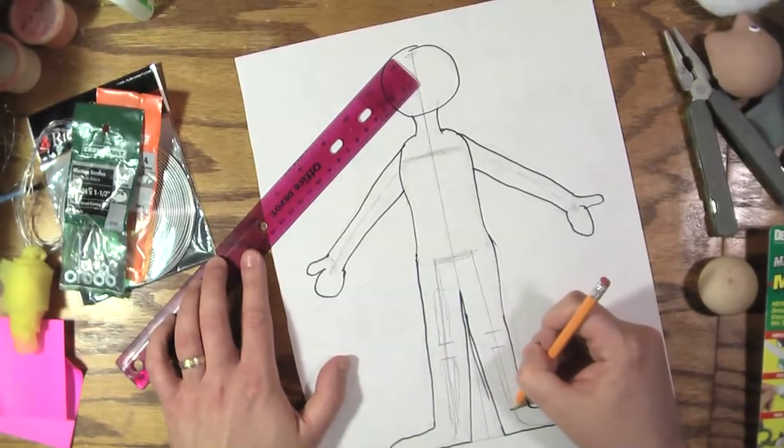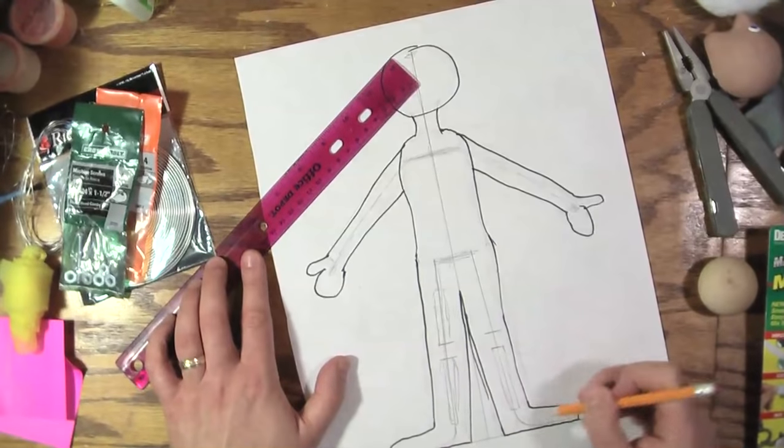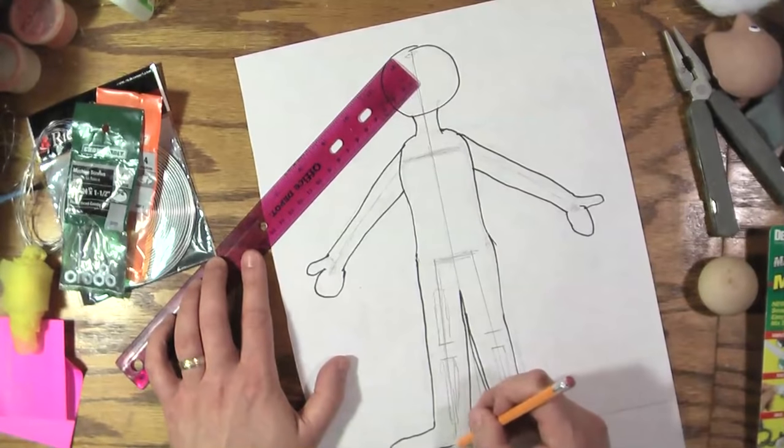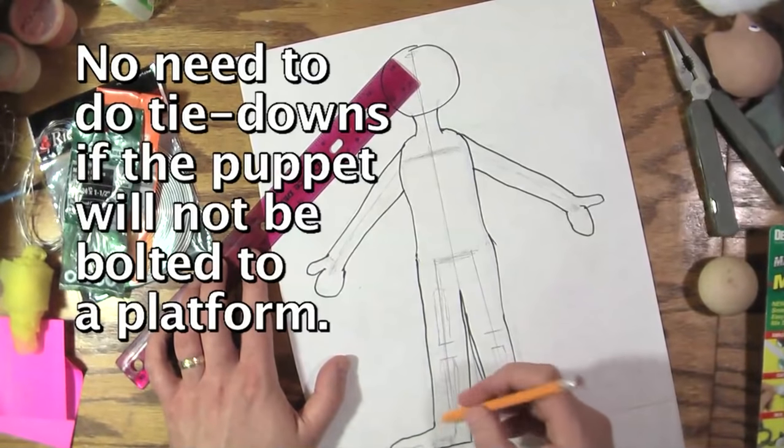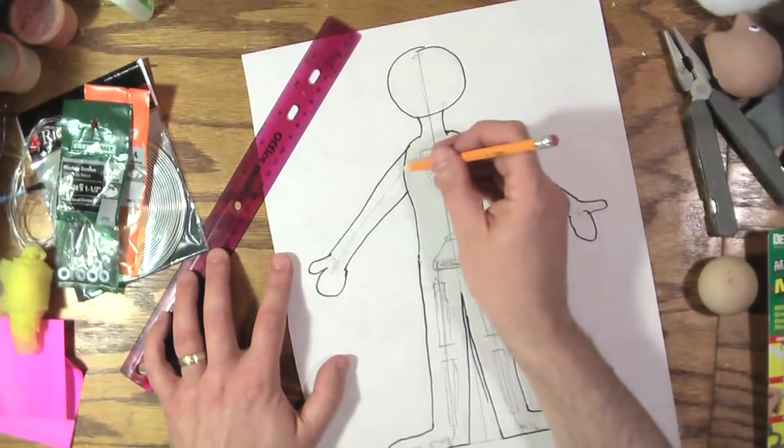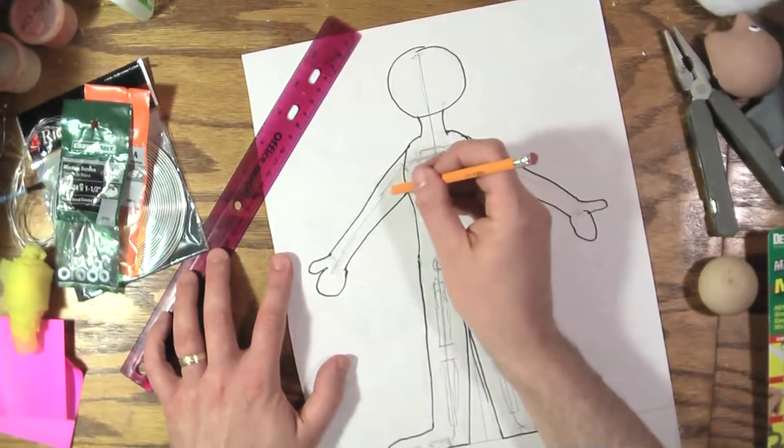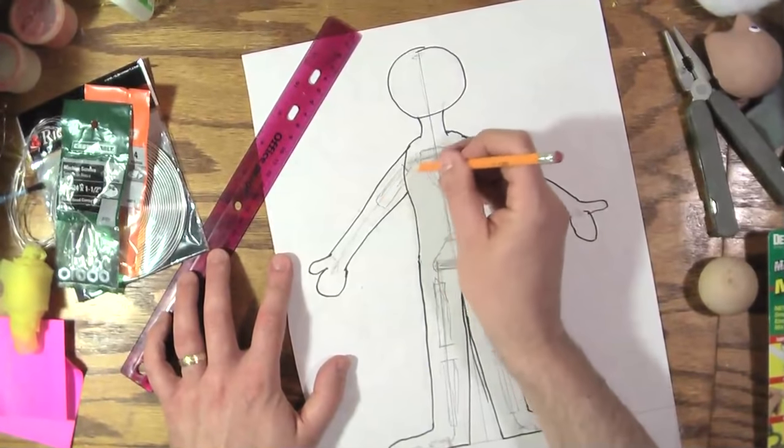Leaving about half an inch, for a character this size, about half an inch in there. We're going to just kind of plan where the tie downs are going to go, the T-nuts. I'm going to put one in the heel, and then one in the toes. The collarbone there, and if he's going to have elbows there, elbow there.